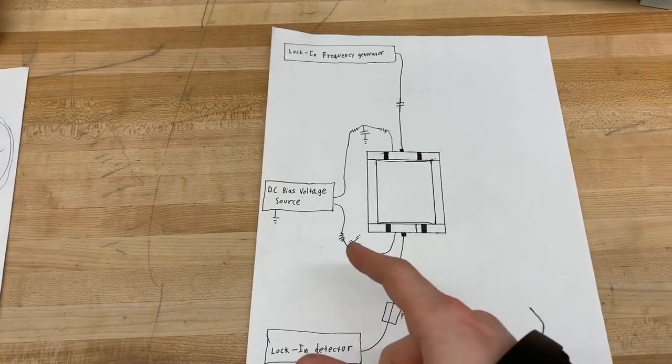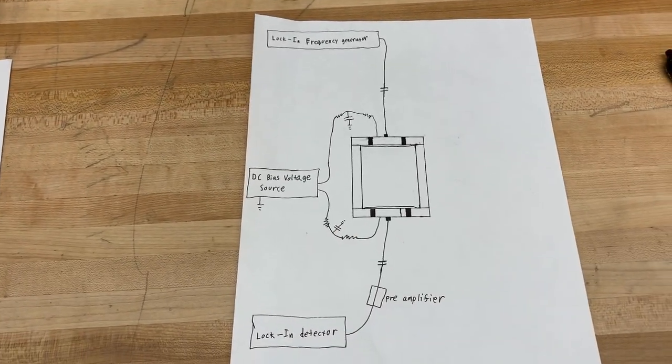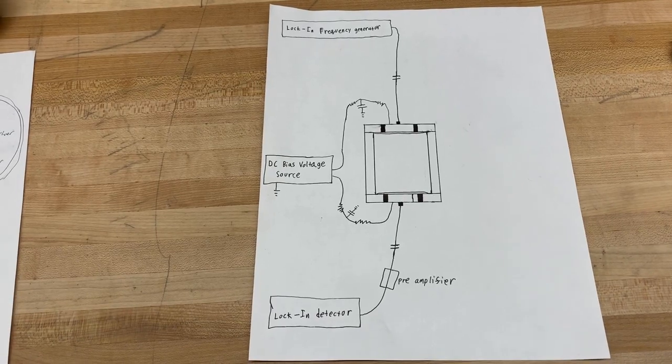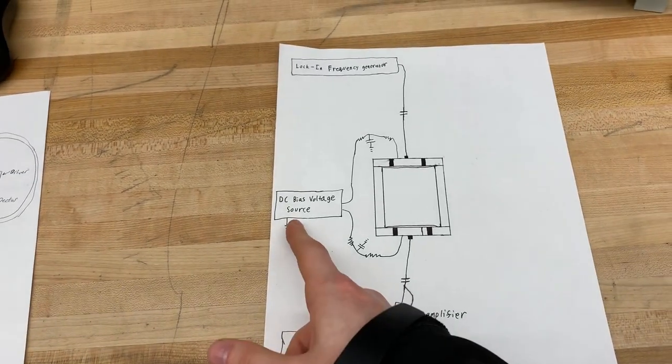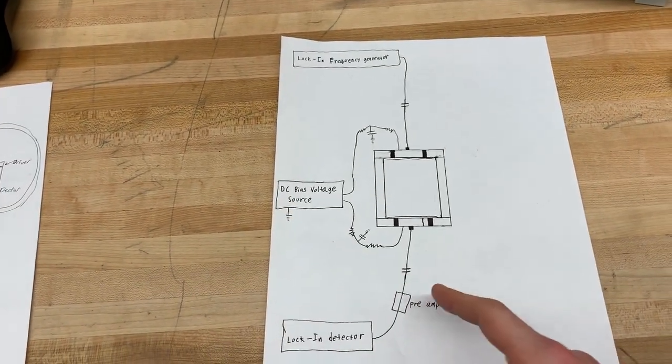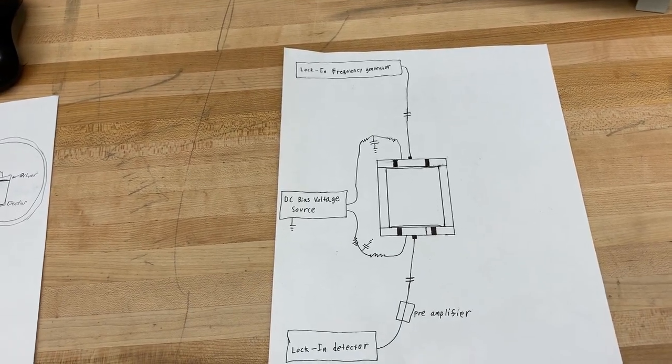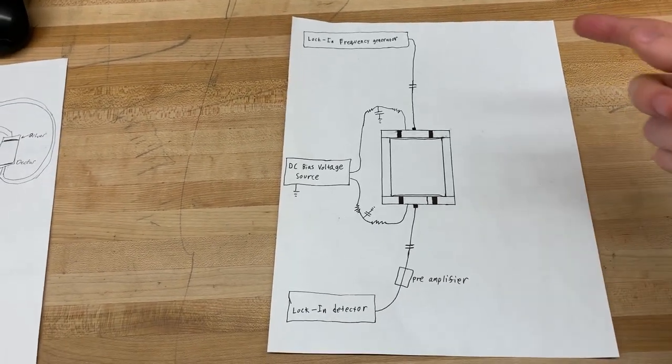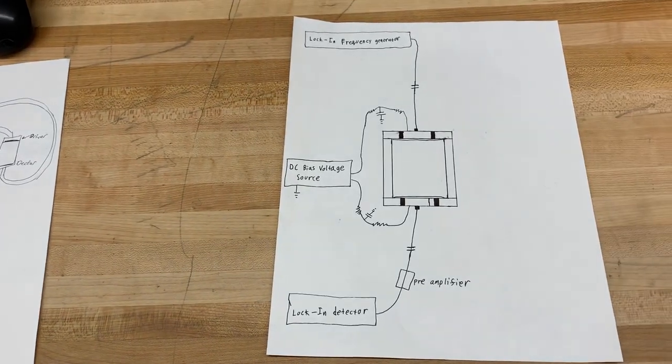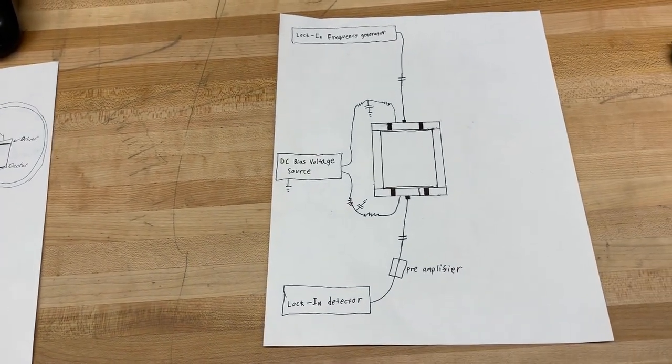The resistors and capacitors that you see in these various filters are contained in boxes in the lab, and we've got a DC bias voltage box and then an amplifier, also a preamplifier. And then of course, the lock-in is connected to a computer, and it's controlled by the computer, the frequency generator is, and also it sends the data straight to the computer so that we can see it graphed.